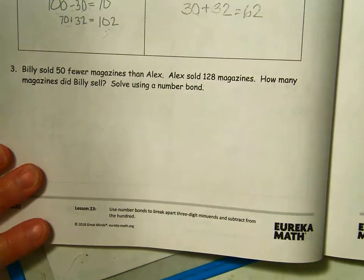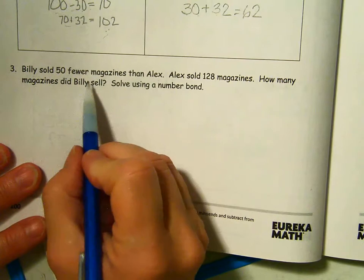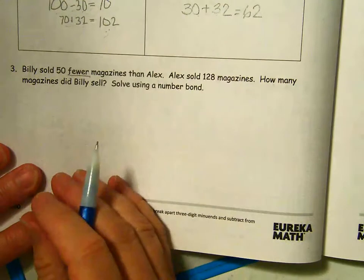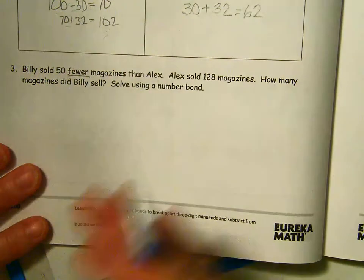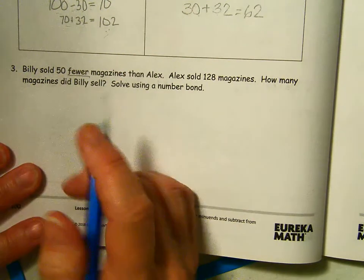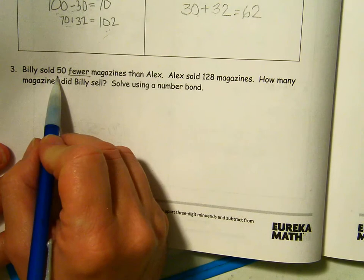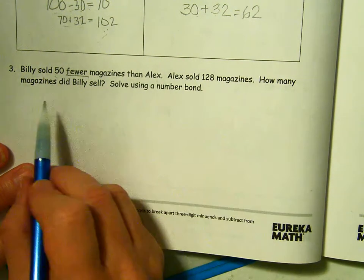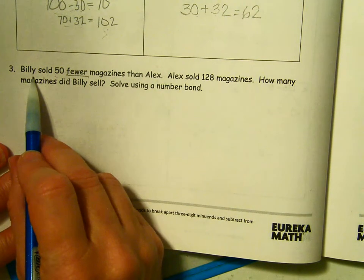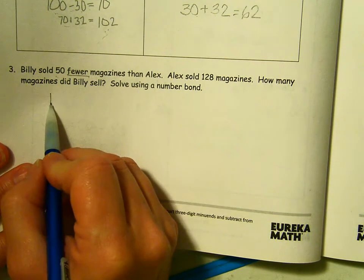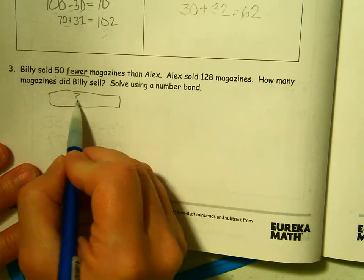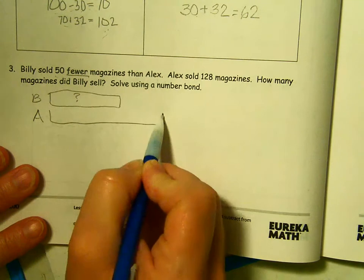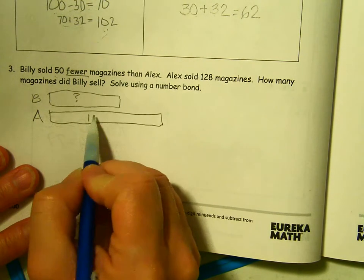All right. Last, we have a word problem. Billy sold 50 fewer magazines than Alex. Fewer. Less. Taking away. Not as many. Billy sold less. How many less? 50. Less than Alex. Alex sold 128 magazines. How many magazines did Billy sell? So here's Billy. We don't know. Here's Alex. Alex, we do know. Alex sold 128.